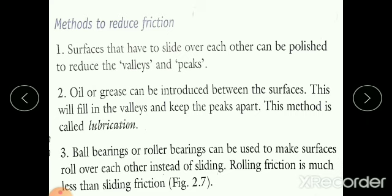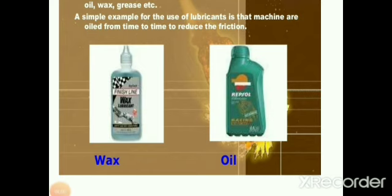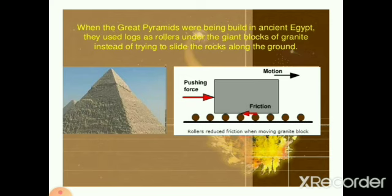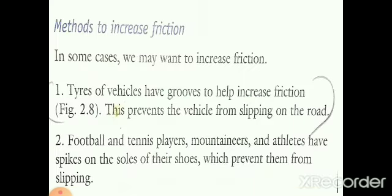Ball bearings or roller bearings can be used to make the surfaces roll over each other instead of sliding, because rolling friction is much less than sliding friction. You can also use wax or oil to reduce friction. Using roller bearings allows objects to move easily, and this is another effective way to reduce friction.